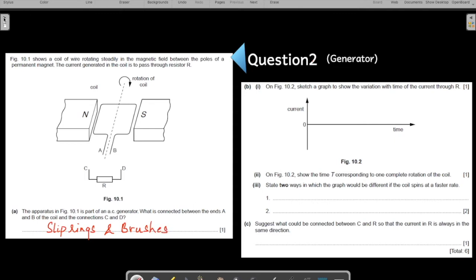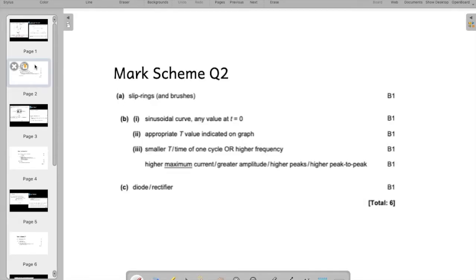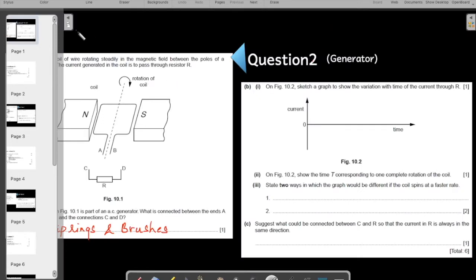So let us tally answer with the mark scheme. I always keep it a point to show you the mark scheme as well, so that you can understand how the mark scheme works. So slip ring and brushes. If you are just writing brushes, you might not get the full marks. But if you are writing slip ring without brushes, you get full marks. So the important component which is missing here is your slip ring. All right.